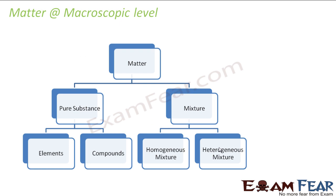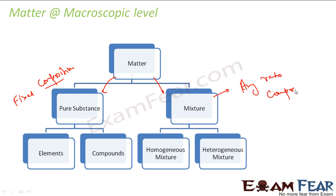The matter at macroscopic level can be divided into pure substance and mixture. Pure substance is something which has fixed composition, and mixture is something where it is any ratio composition. It is all about composition — if the composition is fixed, the ratios are fixed, then it is pure substance; if the ratio is not fixed, it is a mixture. Pure substance can further be classified into elements and compounds, and mixtures can be classified into homogeneous and heterogeneous mixture.